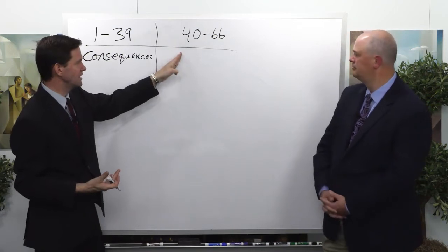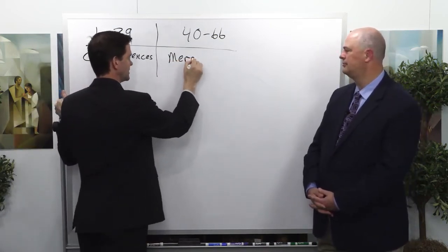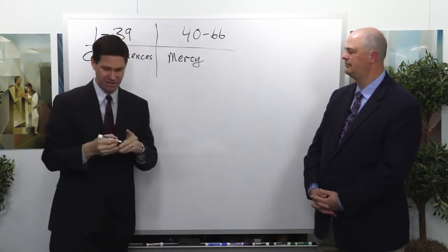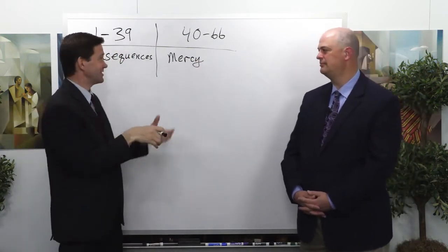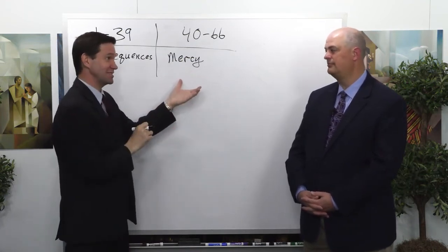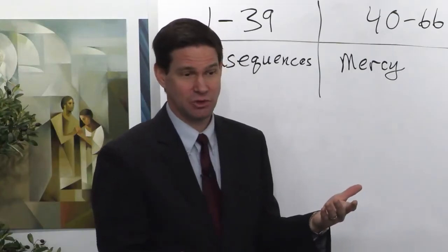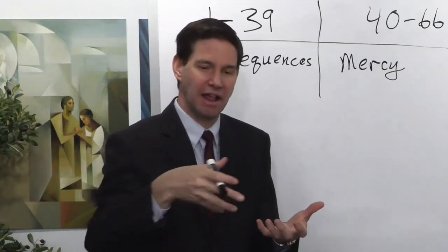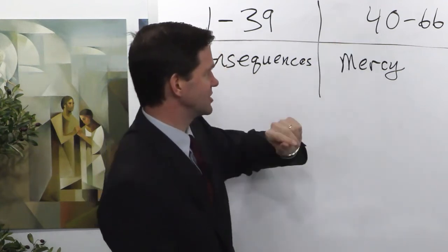When you get to chapter 40, then it shifts to God's mercy and God re-establishing this covenant of I will be your God and you will be my people. Ironically, it's not the people doing this. It's God remembering his covenant with Abraham saying, you don't deserve this, you haven't earned this, but I'm going to be merciful to you, and you're going to find that when we start chapter 40.